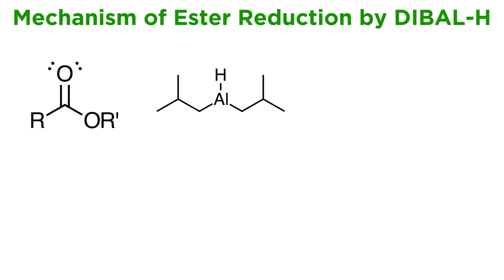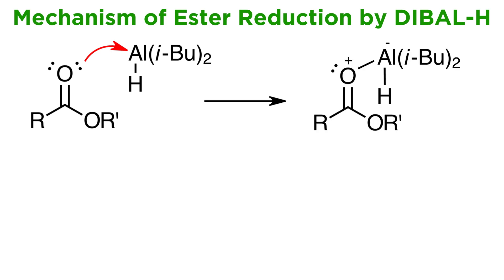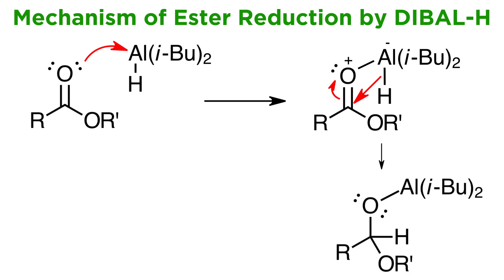So let's go ahead and take a look at the full mechanism. Here is a generalized ester and one equivalent of the reducing agent. We mentioned that the aluminum atom acts as a Lewis acid, so here we can see the carbonyl oxygen attacking and coordinating to aluminum. This results in a formal negative charge on aluminum and a formal positive charge on oxygen. This is what prompts the delivery of the hydride to the carbonyl, as in doing so the aluminum is neutralized, and this pi bond will go to neutralize the oxygen atom as well, producing this relatively stable hemiacetal.